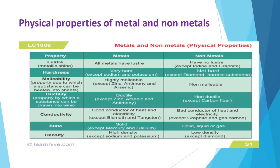Metals are hard, that is why they can be used for making wires and plates. Non-metals do not show this property. Malleability means the property by which we can make thin sheets of metals. That is why metals are used for making thin plates and utensils. Non-metals do not show this property — that is called malleability.